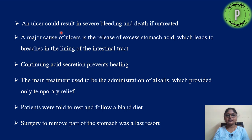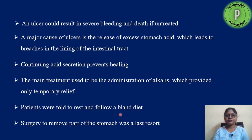So what is an ulcer? An ulcer causes severe bleeding and death if untreated. A major cause is the release of excess stomach acid, which leads to breaches of the intestinal tract — holes form in the lining. This continuous acid secretion prevents healing and finally results in bleeding and death if untreated. The main treatment in those days was administration of alkalies for temporary relief, a bland diet, or ultimately removing part of the stomach if the ulcer didn't resolve.